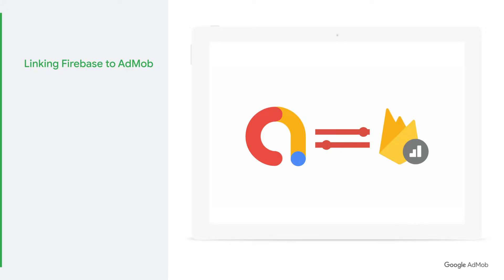Now, let's see how you can link AdMob apps to Firebase. First, make sure you have enabled user metrics when setting up your AdMob account. You can find detailed instructions on how to do this in the description box below. After you have enabled user metrics, make sure you also meet the following requirements.